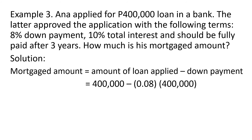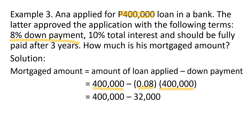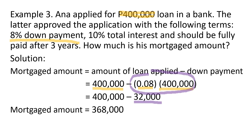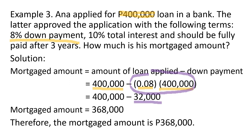By substitution, the amount of loan applied is P400,000 pesos, less the down payment. The down payment is not directly given, but it is stated as 8%, so to get the down payment: 8% or 0.08 of 400,000 pesos equals 0.08 times 400,000, which equals 32,000. The difference between 400,000 and 32,000 is 368,000. Therefore, the mortgage amount is P368,000 pesos.